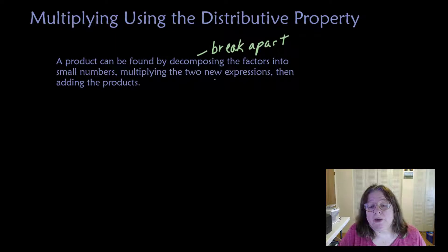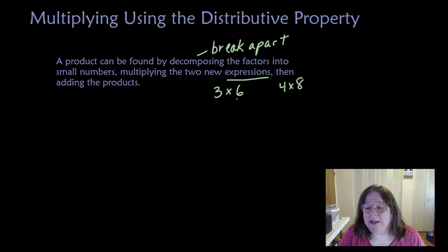Then we multiply the two new expressions. An expression is simply, you know, 3 times 6, 4 times 8. It's not a number sentence. It doesn't have an equal sign. Then we add the products.